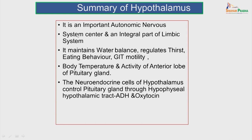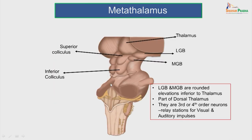The hypothalamus is an important part of the autonomic nervous system and an integral part of the limbic system. It maintains water balance, regulates thirst and eating behavior, controls gastrointestinal tract motility, maintains body temperature and the activity of the anterior pituitary gland. The neuroendocrine cells of the hypothalamus control the pituitary gland through the hypothalamic-hypophysial tract through the secretions of antidiuretic hormone and oxytocin.